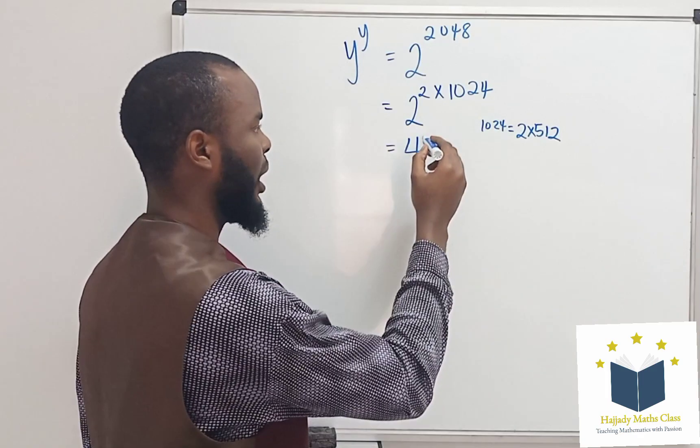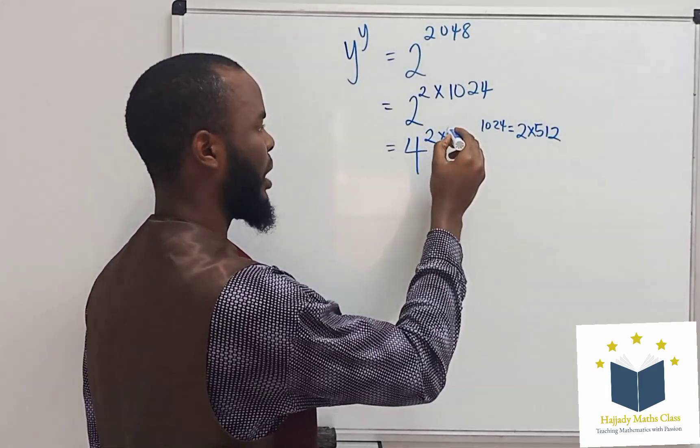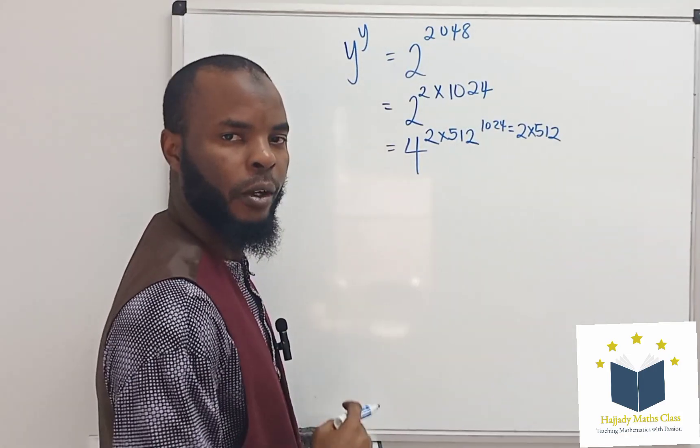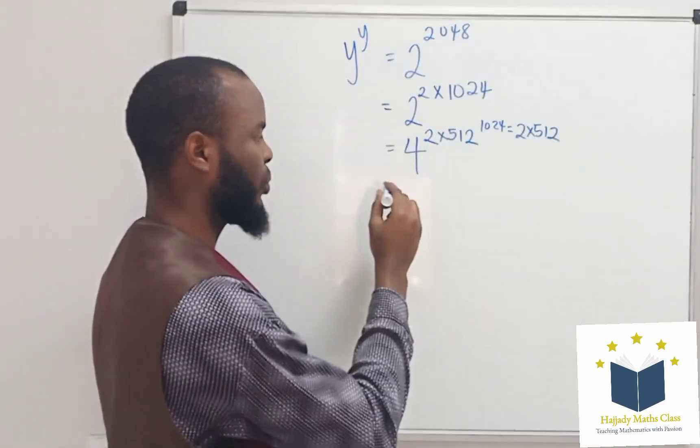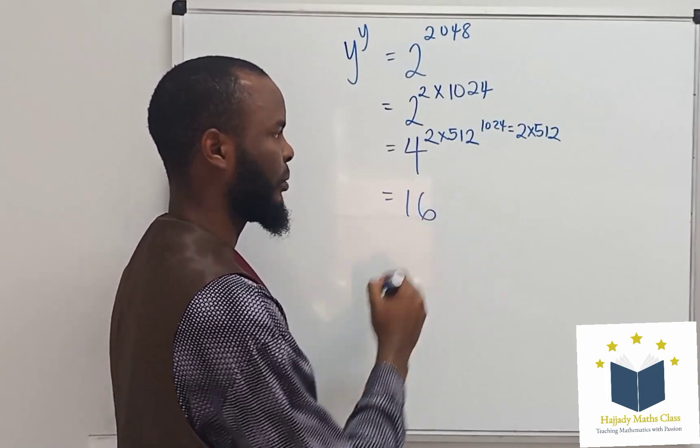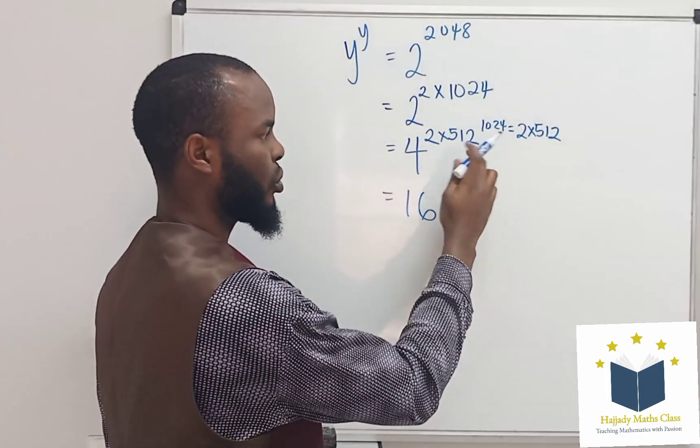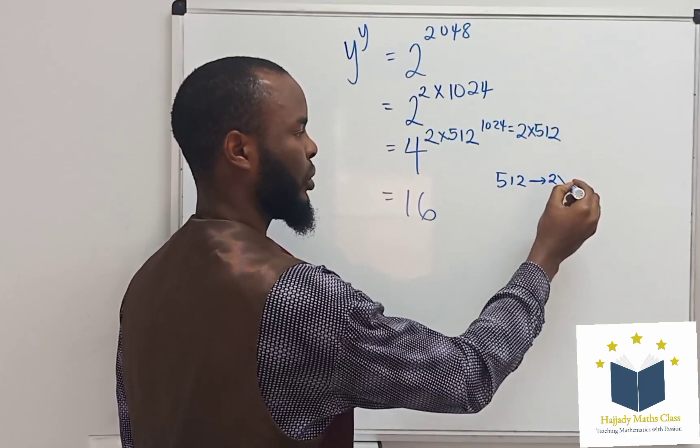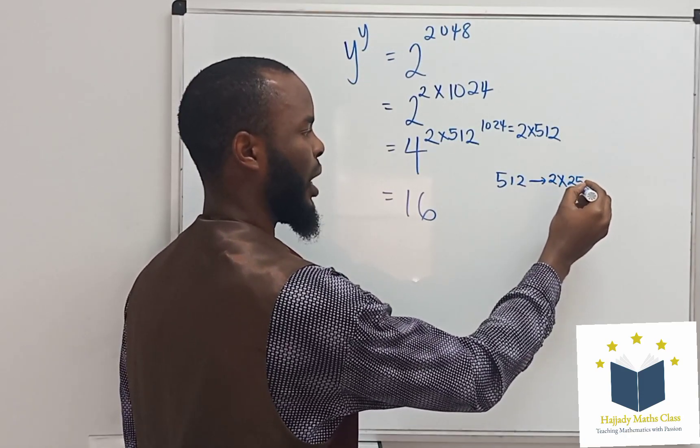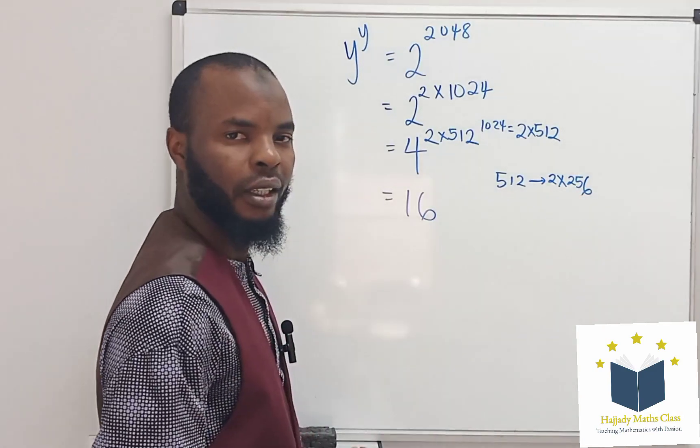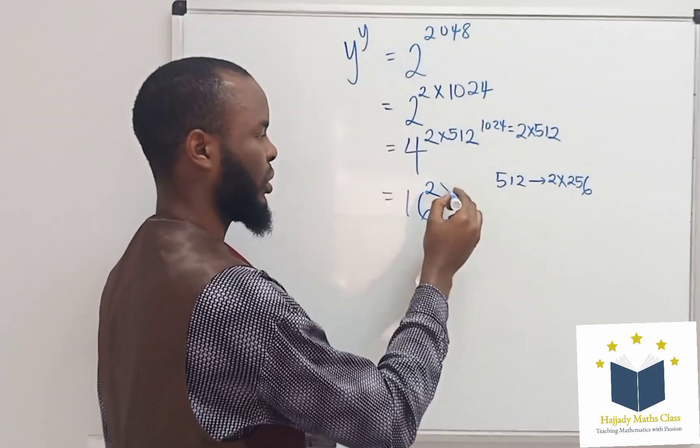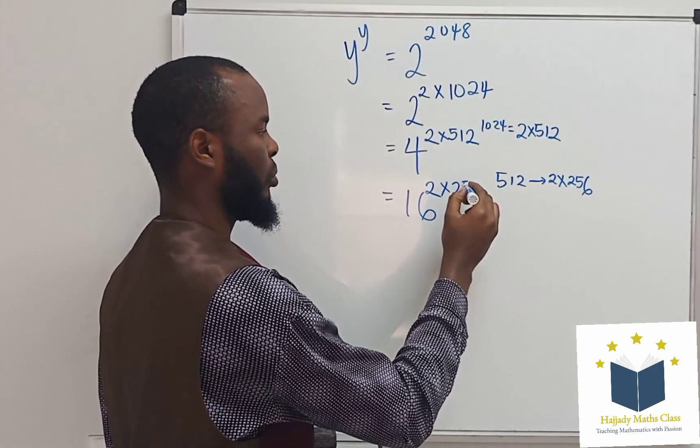I'm going to have 2 times 512. 4 to the power of 2 gives 16. So 512 can be written as 2 times 256. This power is going to be 2 times 256.